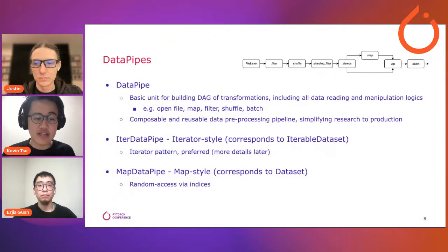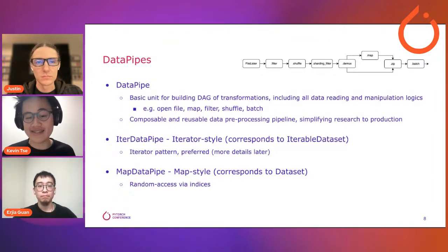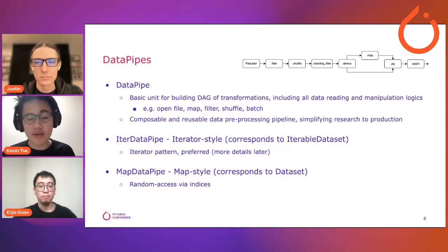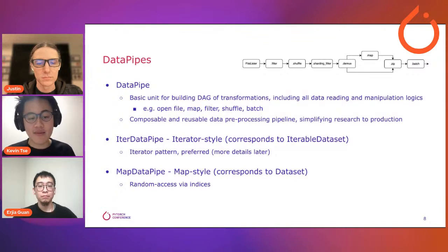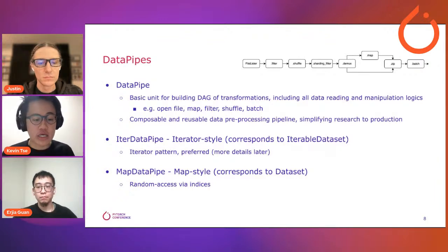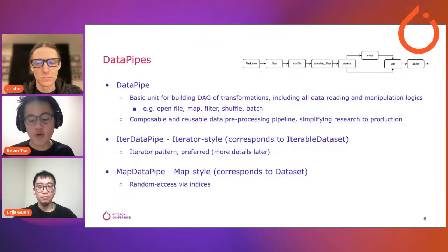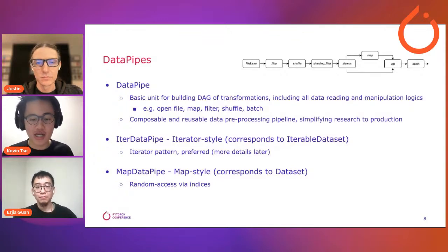IterDataPipe is iterator style — it corresponds to iterable dataset in PyTorch, follows the iterator pattern, and will be the preferred data pipe going forward. The second type is MapDataPipe, which follows map style corresponding to dataset. It has random access via indices, so users will be asked to implement __getitem__, as you do in dataset.